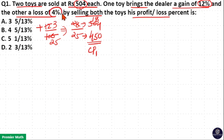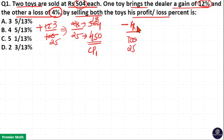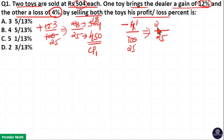The other toy causes a loss of 4%. Loss means negative 4%, which is −4/100. Simplifying: 4 goes 25 times in 100, giving −1/25. So 25 parts is the cost price, and 25 minus 1 = 24 parts is the selling price.